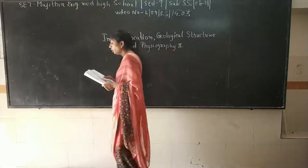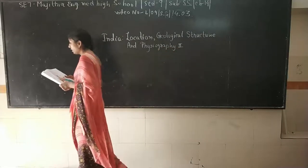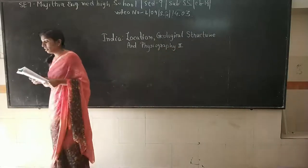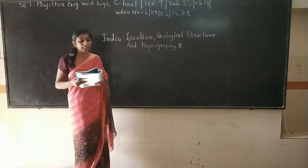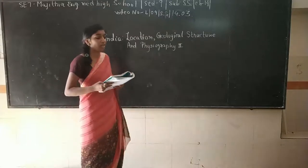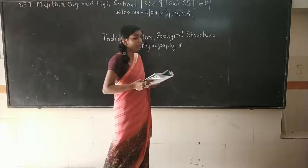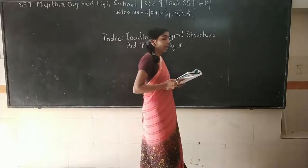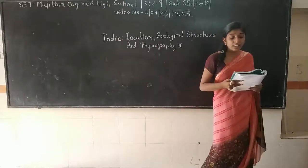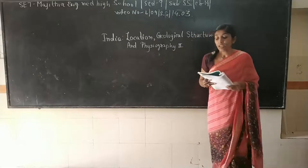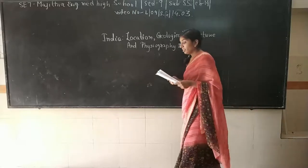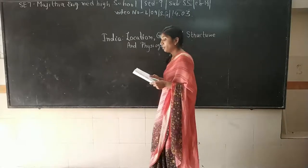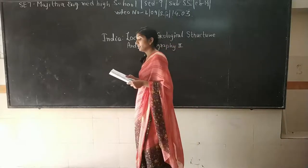The rock surface is eroded due to factors like temperature, rain, snow, air, vegetation, and insects. It turns to a powdery form. Thus it forms a thin end layer.